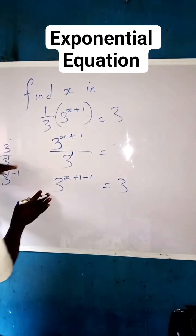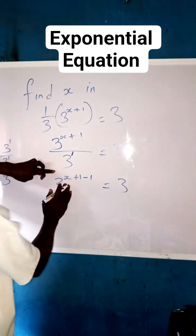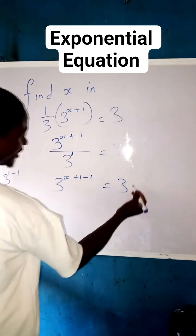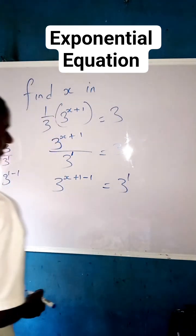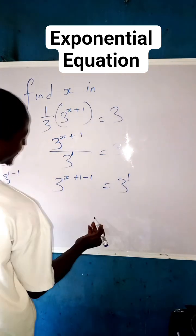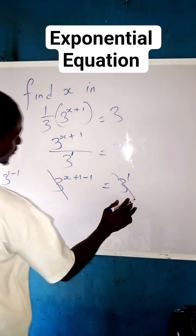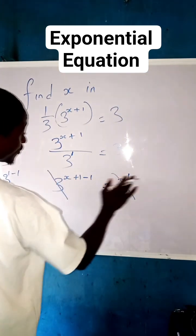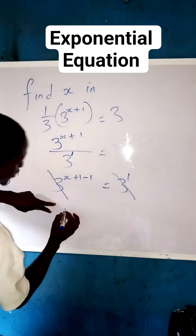So equals to three. Now you can see that we are having the same base and different powers, so we are going to equate the powers. This power is also one, because three to the power one is three. So we don't need this for now. We can solve on these powers.